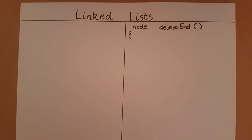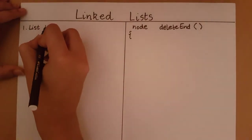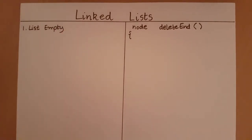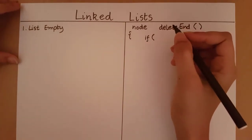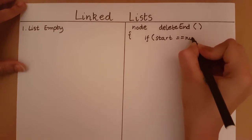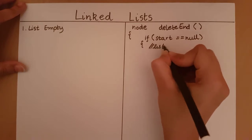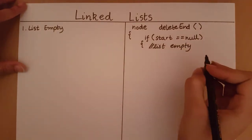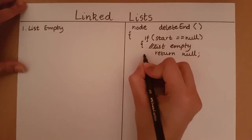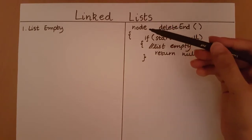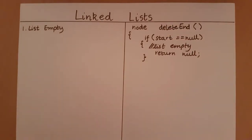Let's look at the few cases we can encounter when performing the deleteEnd operation. The first case is when the list is empty. When the list is empty there is no element for us to delete. In such a case we don't want to continue with our function and we would like to return. So if start is equal to null, we say that the list is empty and we want to return. I am returning a null value since we have already defined our return type as node but we could not find the node which we want to delete, so we will return null.